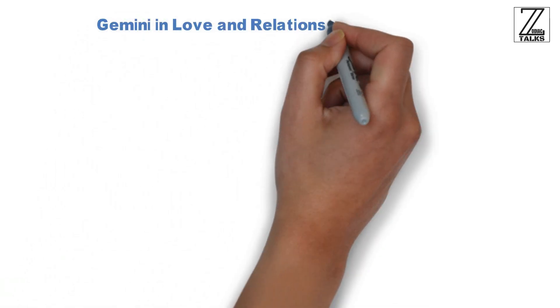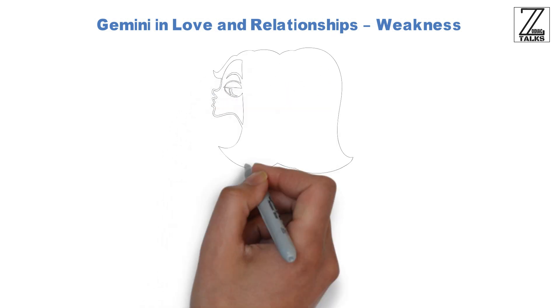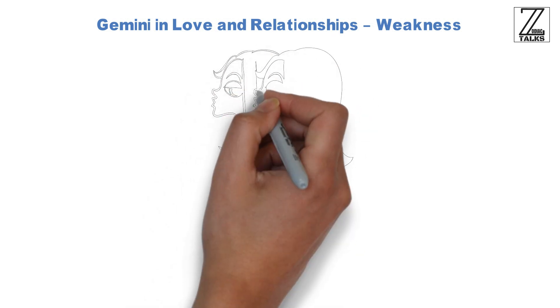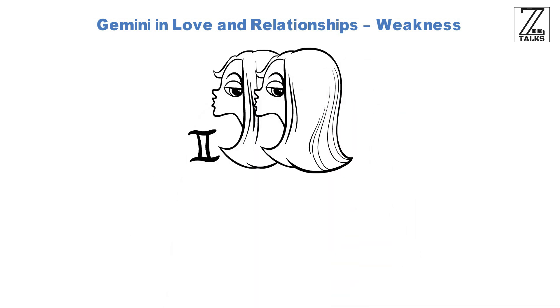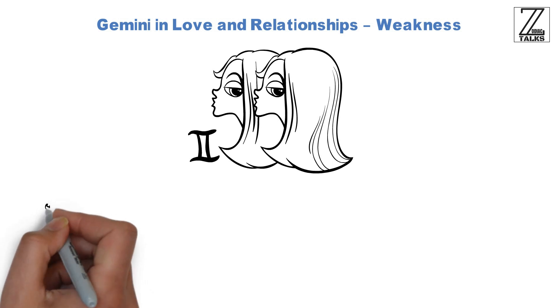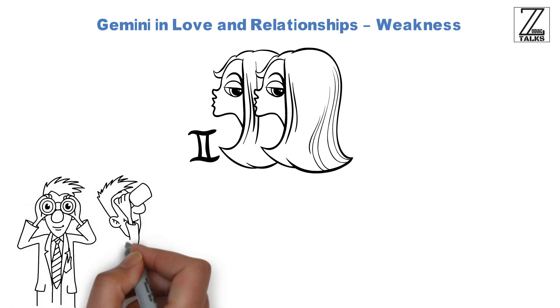Gemini in love and relationships weakness. Those born under the third sign of the zodiac are known for being expressive, creative and good at communicating, but they're also known for being unpredictable, flighty and just plain hard to understand. Geminis often feel like something's missing and they're in a constant search for something, though they rarely know what that something is.